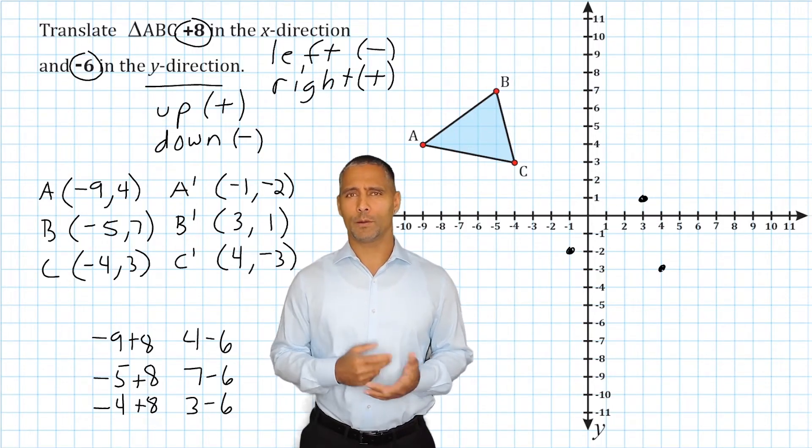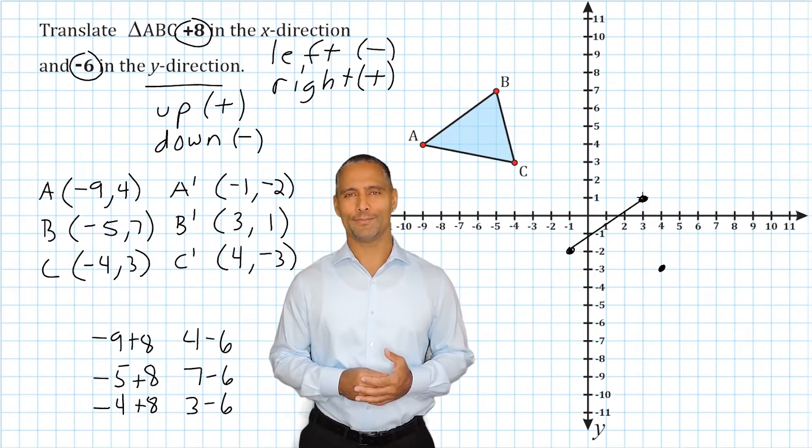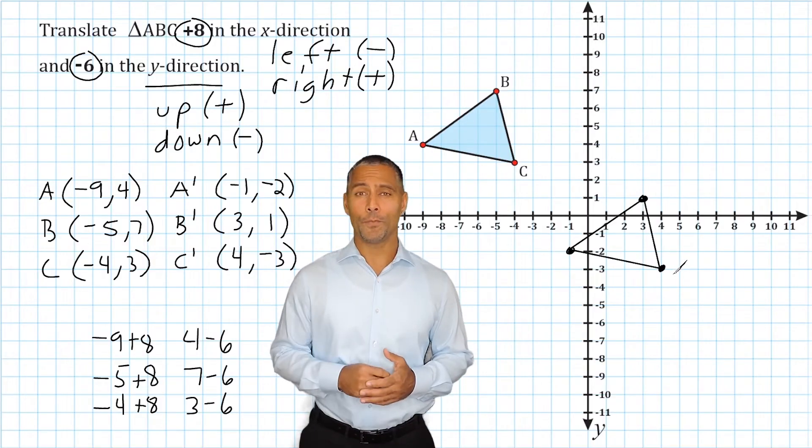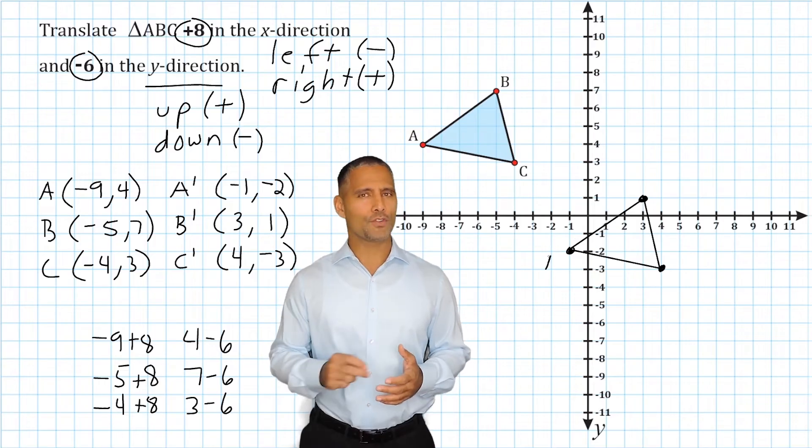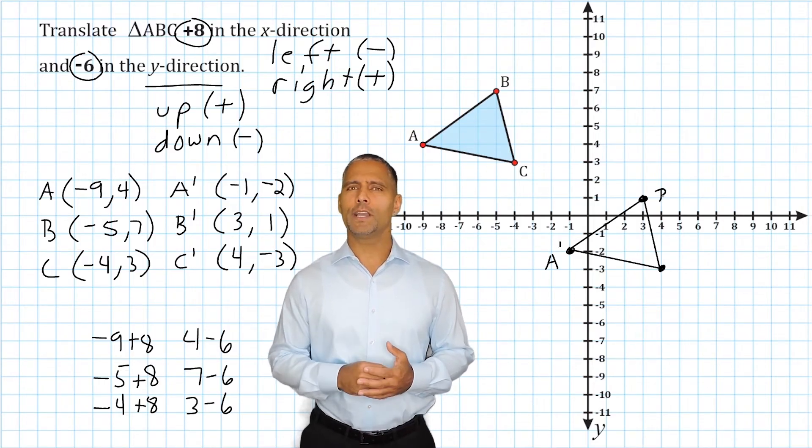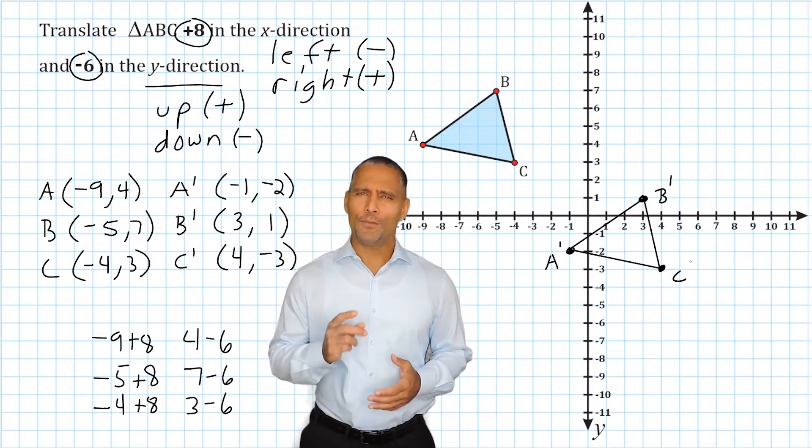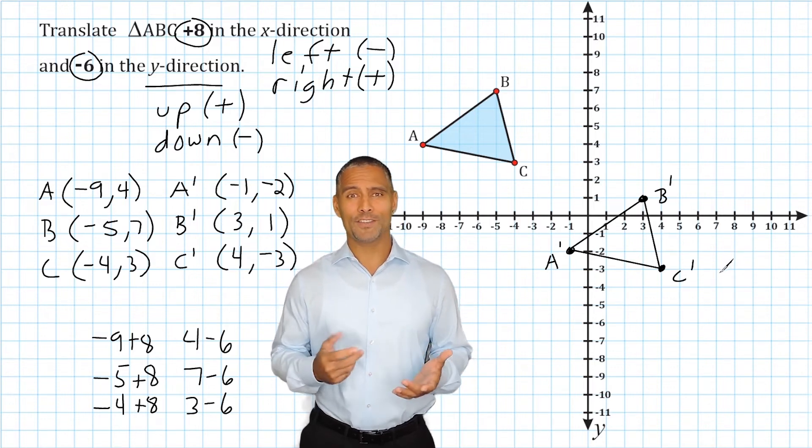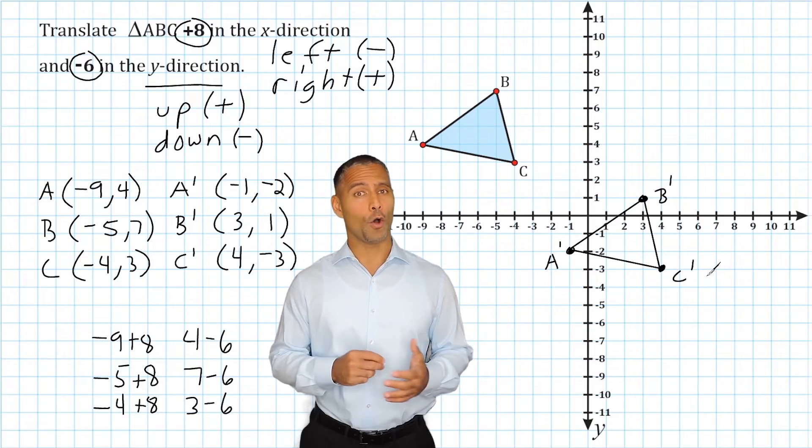Now we can connect our points together to form our translated triangle. Now, one thing that we should remember about any translation is that after the object is translated, it should be congruent to the original object. If your shape is not congruent, well that just means that your coordinates are not all correct.